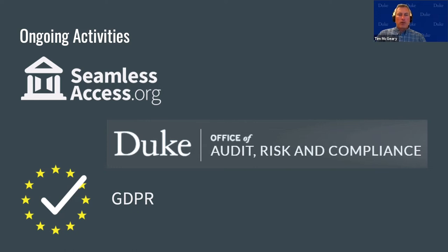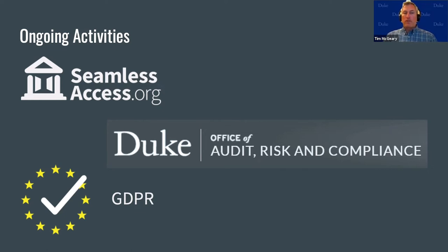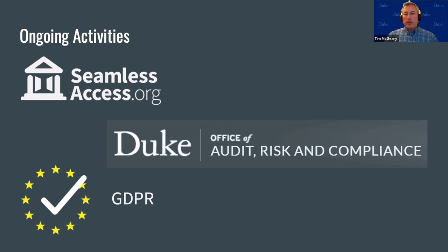Three precursors to our work were activities directly related to data privacy. Tim was invited to participate in developing the Seamless Access entity categories and attribute bundles. Duke created a data privacy officer position, and one of the first engagement projects was with the libraries, given our reputation for patron privacy. We were also engaged in a difficult negotiation with a library vendor seeking additional privacy protections and actions to ensure vendor compliance with GDPR. This experience emphasized the tenuous nature of ensuring data privacy when user data is a valuable commodity.